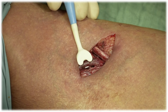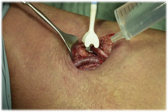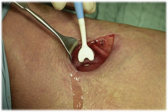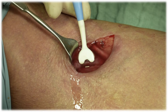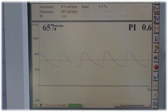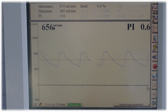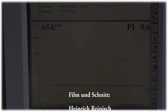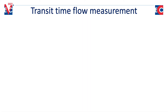Saline solution is used between the vessel and the probe to avoid the air gap. The blood flow signal is recorded until a steady state is achieved. The flow curve can then be recorded and gives you diagnostic information.